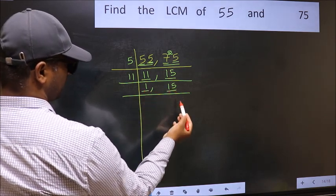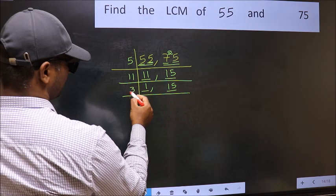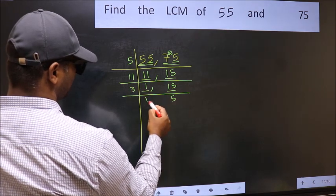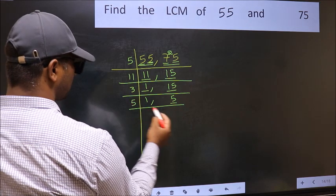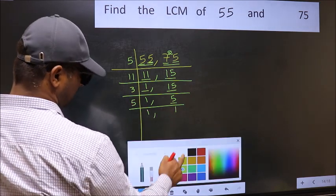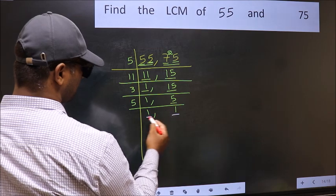So focus on to the next number 15. 15 is 3 fives is 15. Now here we have 5, 5 is a prime number, so 5 ones 5. So we got 1 in both the places.